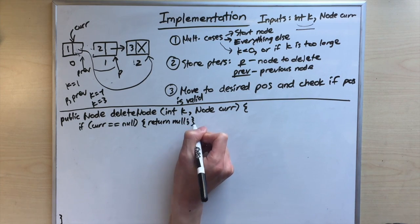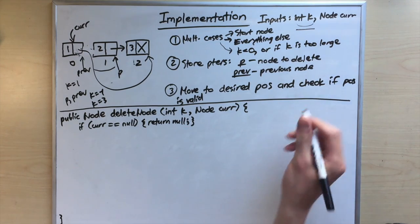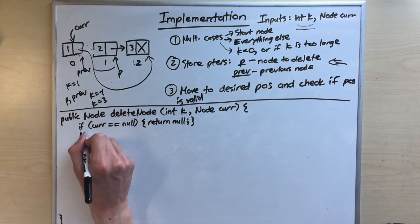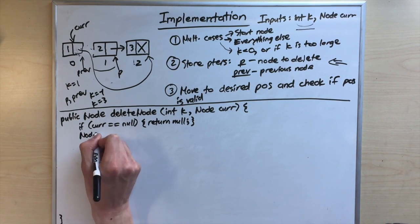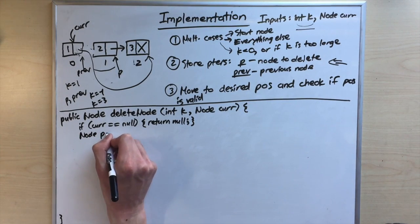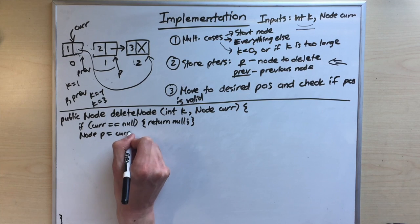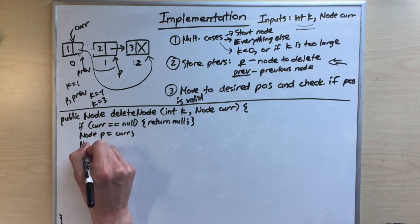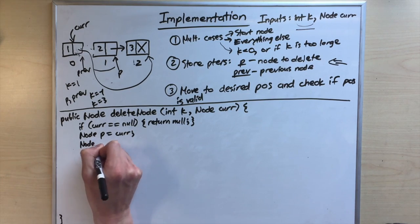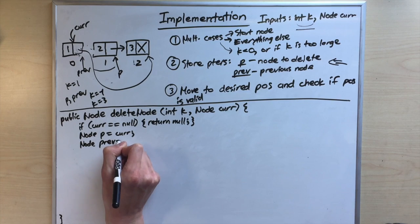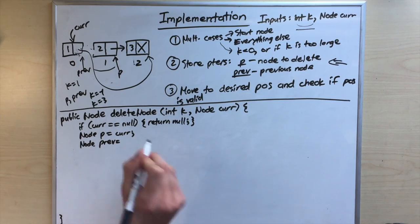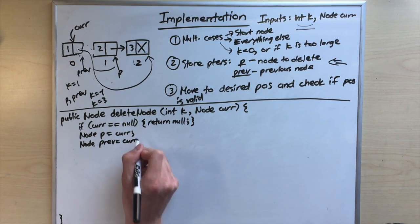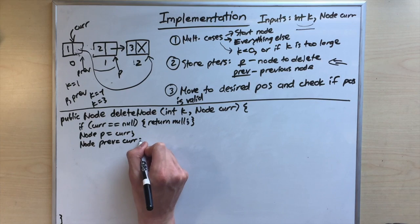Otherwise, we initialize both pointers: Node p = cur and Node prev = cur. As we move forward, prev will fall one step behind p.